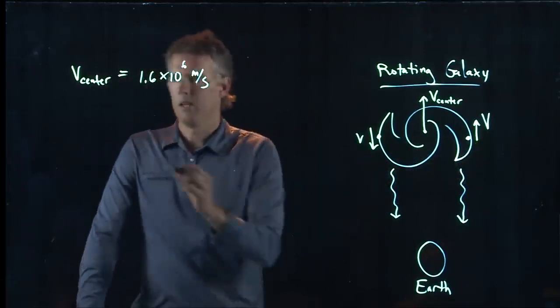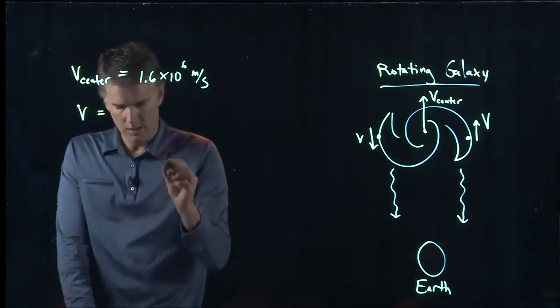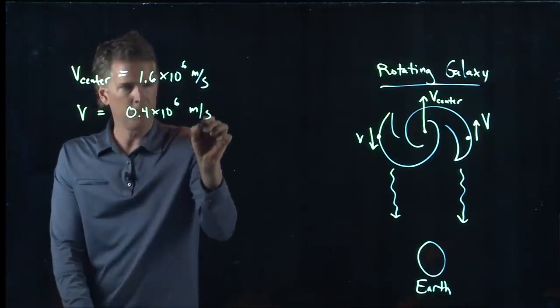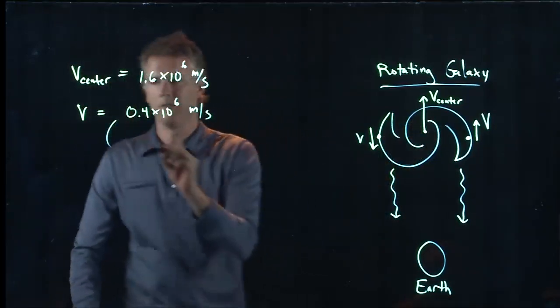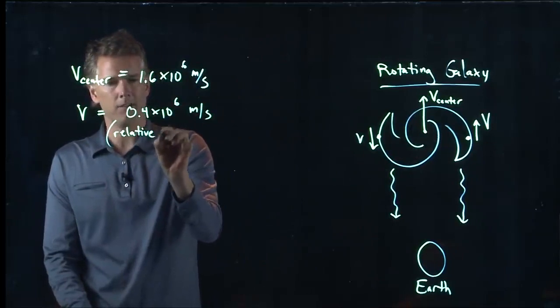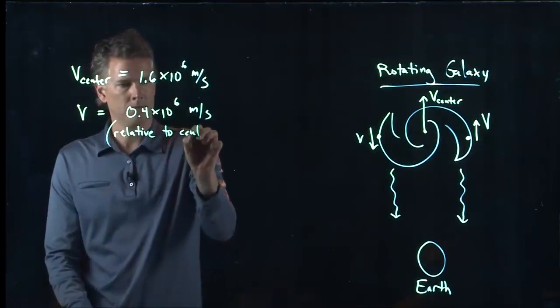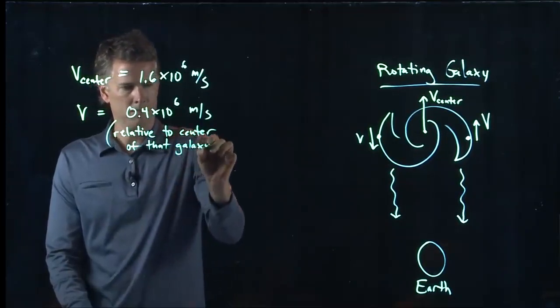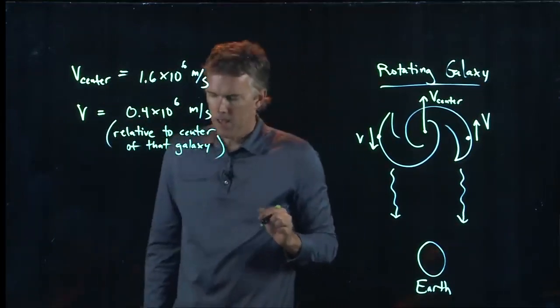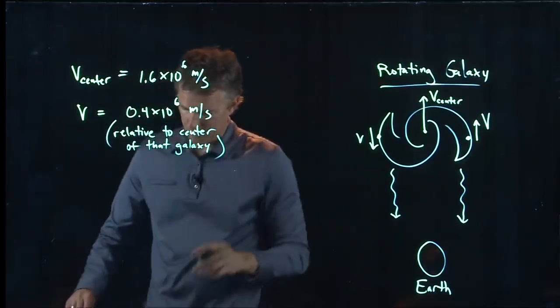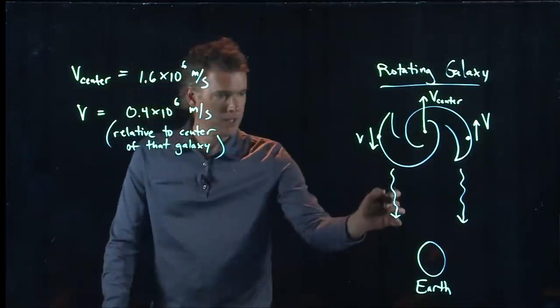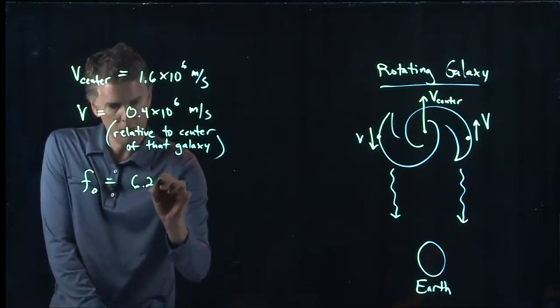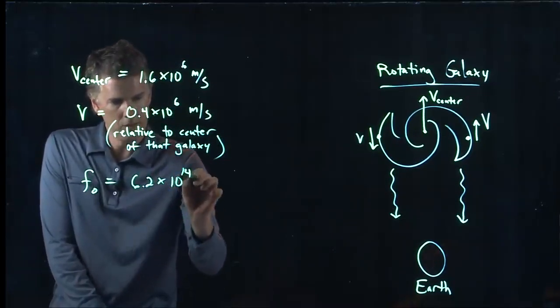The speed here, V, is 0.4 times 10 to the 6 meters per second. But this is relative to the center of that galaxy. The source of the light has a frequency F0 of 6.2 times 10 to the 14 hertz.